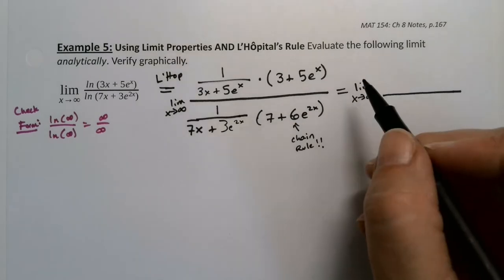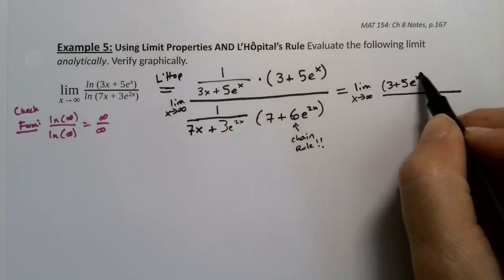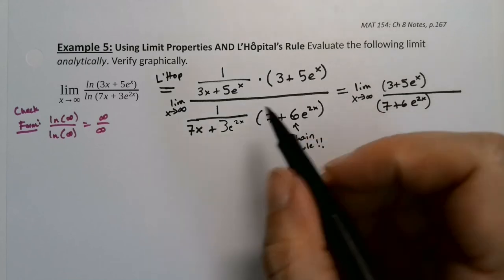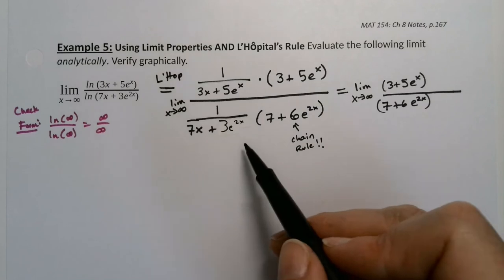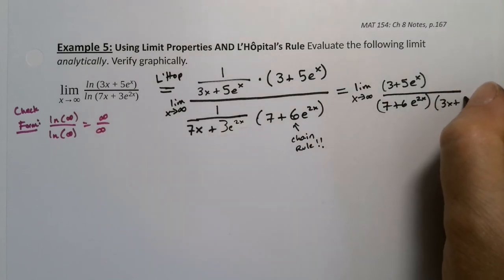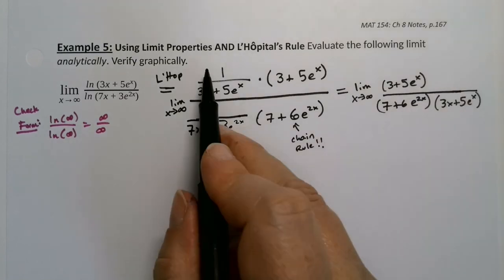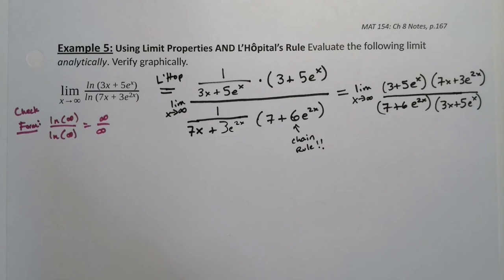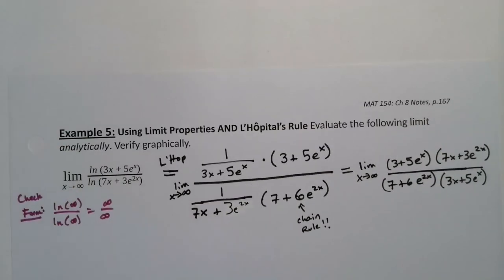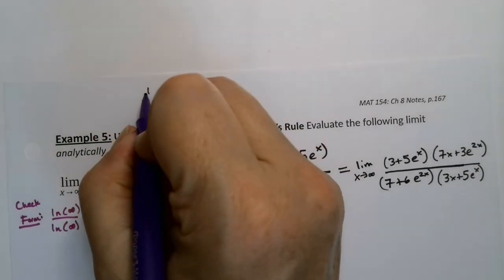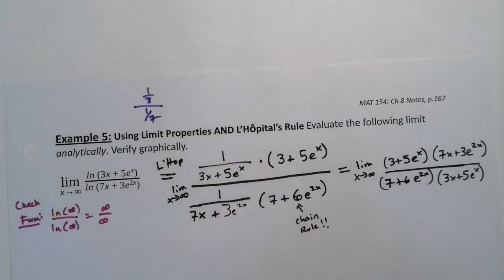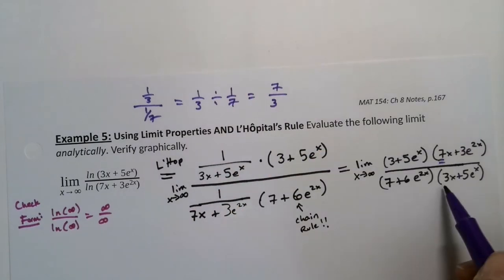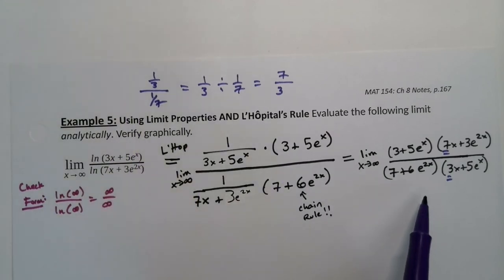So this is the limit as x goes to infinity. The things in the denominators can swing around and be put into the numerators. I have (3 + 5e^x) in the numerator and (7 + 6e^(2x)) down here. The (3x + 5e^x) can swing down, and because it's division of a division, (7x + 3e^(2x)) swings up. For example, 1/3 divided by 1/7 equals 7/3 — that's the root of what I'm doing.